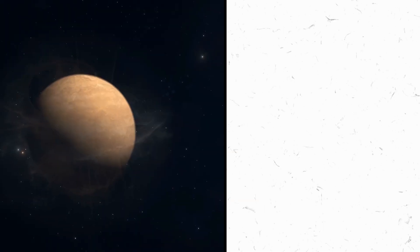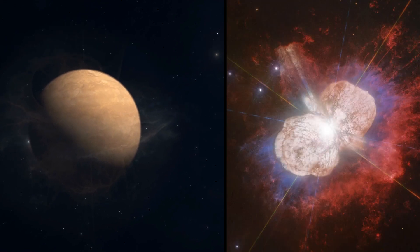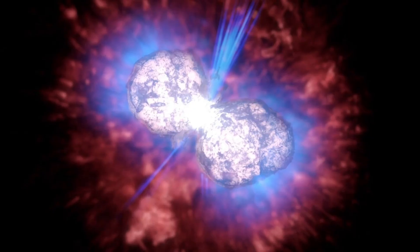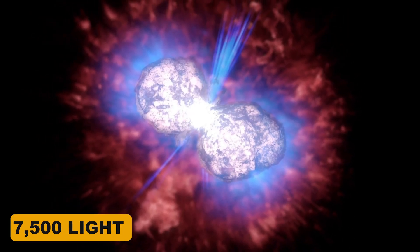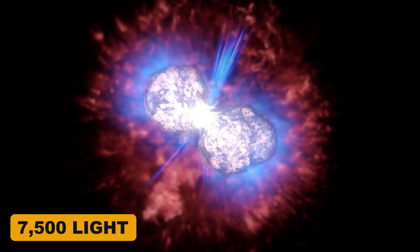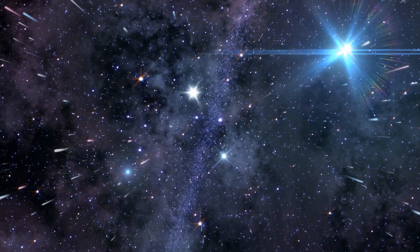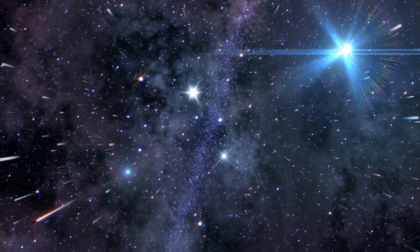And if you think this brown dwarf is hot, what would you say about Eta Carinae? It's a star located about 7,500 light-years away from Earth, and it belongs to an elite group of stars we call luminous blue variables.